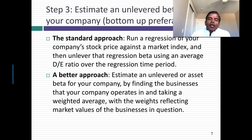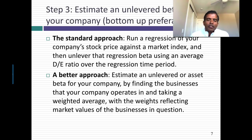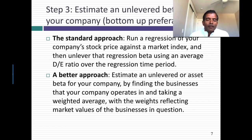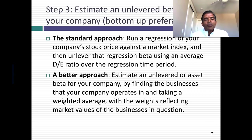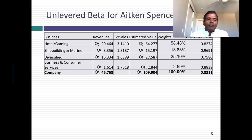Step three: estimate an unlevered beta for your company based on the businesses it's in. The standard way is to run a regression of returns on your stock — in this case Aitken Spence against an index like the Sri Lankan index — and the slope of the line is the beta. I do not like that approach, and I've explained why in multiple webcasts. My preferred approach is to start with the businesses you're in as a company and build up to a beta. Look at how much value you get from each business, look at the beta for each business, and take a weighted average.